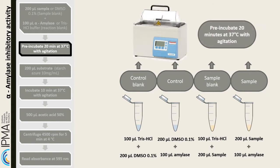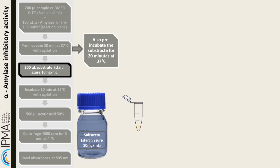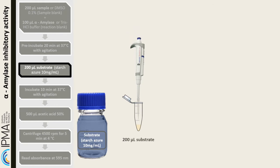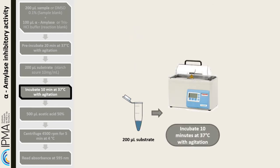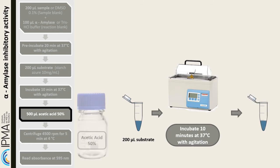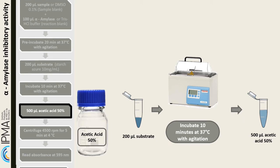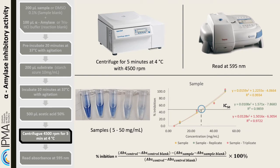Also incubate the substrate starch azure to bring it to 37 degrees before adding it. Add 200 microliters of starch azure and incubate for 10 minutes at 37 degrees Celsius with agitation. After incubation, stop the reaction by adding 500 microliters of acetic acid 50 percent. Then centrifuge at 4500 rpm for 5 minutes at 4 degrees Celsius, and read the samples at 595 nanometers.